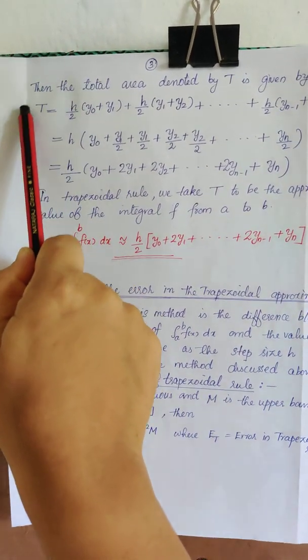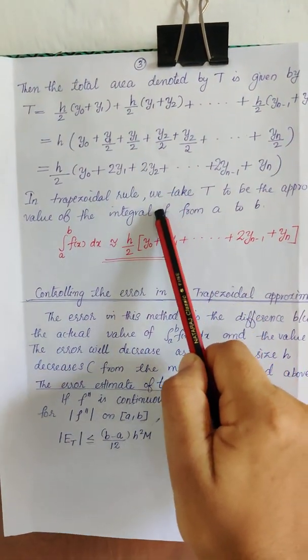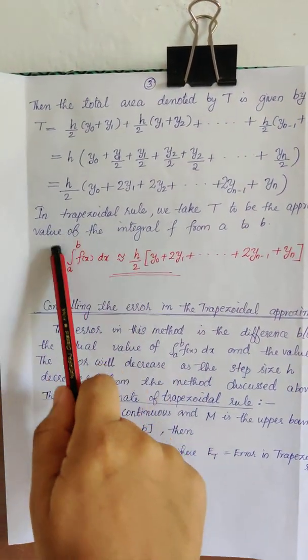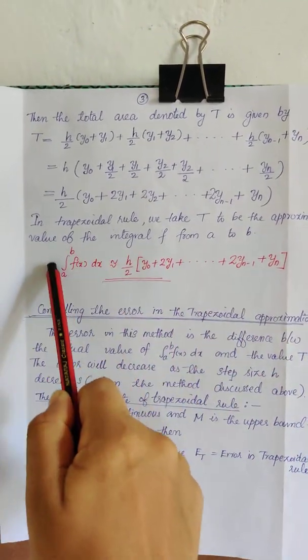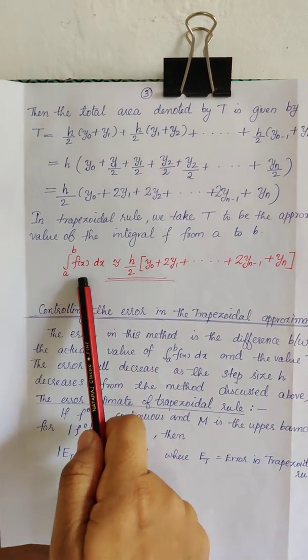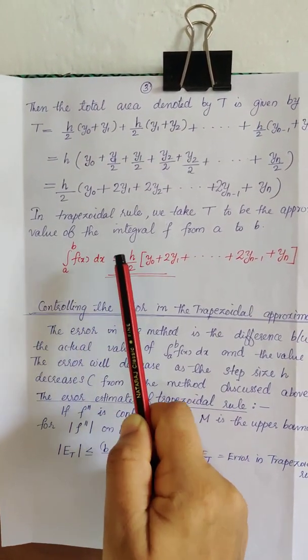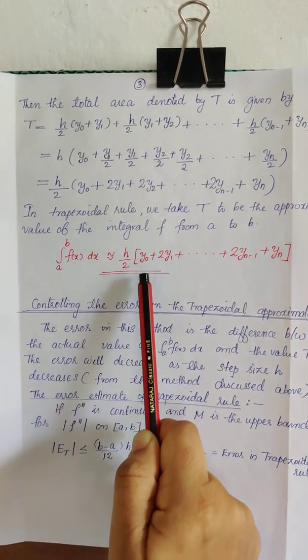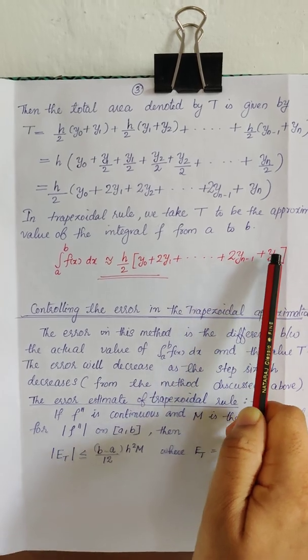This will be the trapezoidal approximate value of the integral of f from a to b. This is the trapezoidal approximation. You have to study this formula and it is very easy. Integral a to b f of x dx, which is approximately equal to h by 2 into y0 plus 2y1 plus etc. plus 2y_n minus 1 plus y_n.